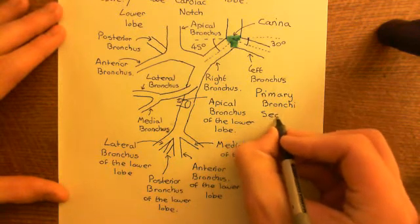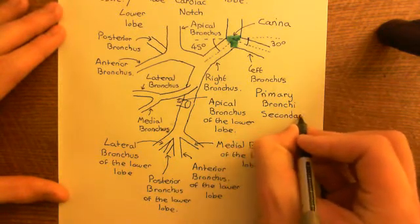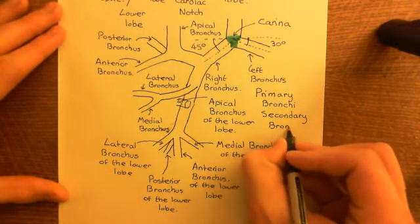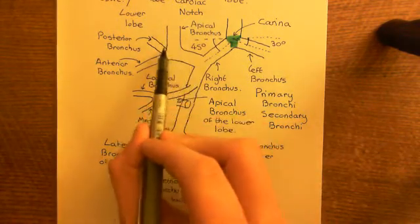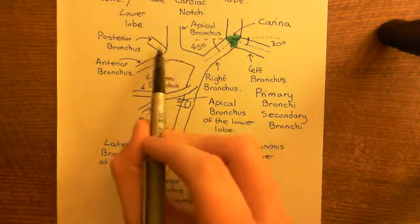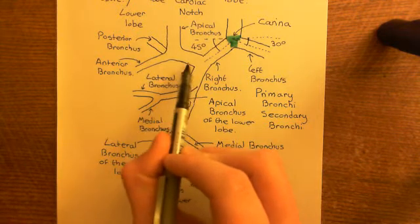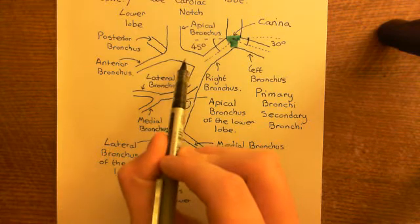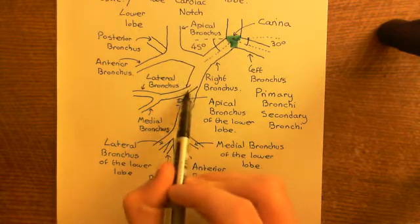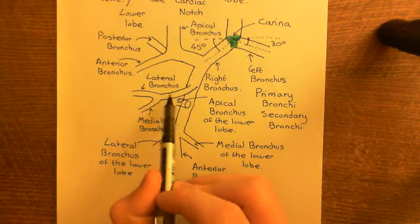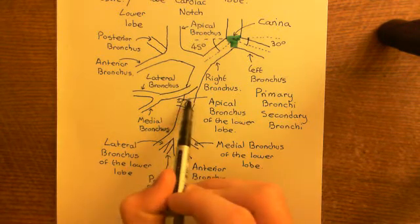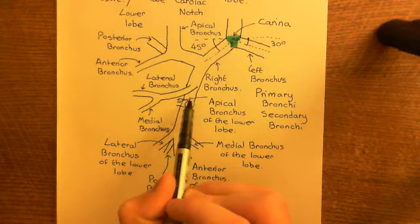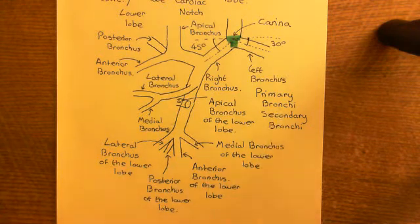You then have what are known as the secondary bronchi. The secondary bronchi are the bronchi which are supplying the individual lobes. So the bronchus supplying the upper lobe, before it splits into three separate portions, was supplying a whole lobe — that was a secondary bronchus. The branch supplying the whole of the middle lobe is a secondary bronchus, and the branch supplying the whole of the lower lobe is another secondary bronchus. So secondary bronchi supply the whole lobes.